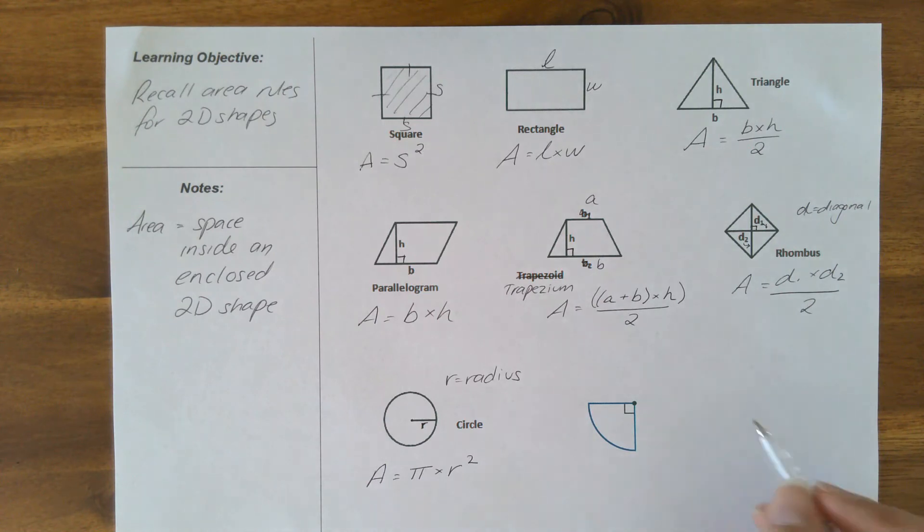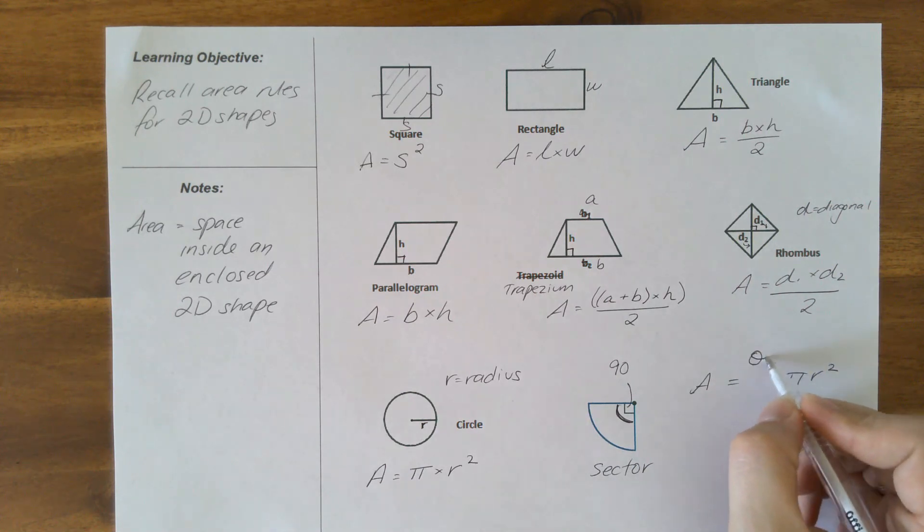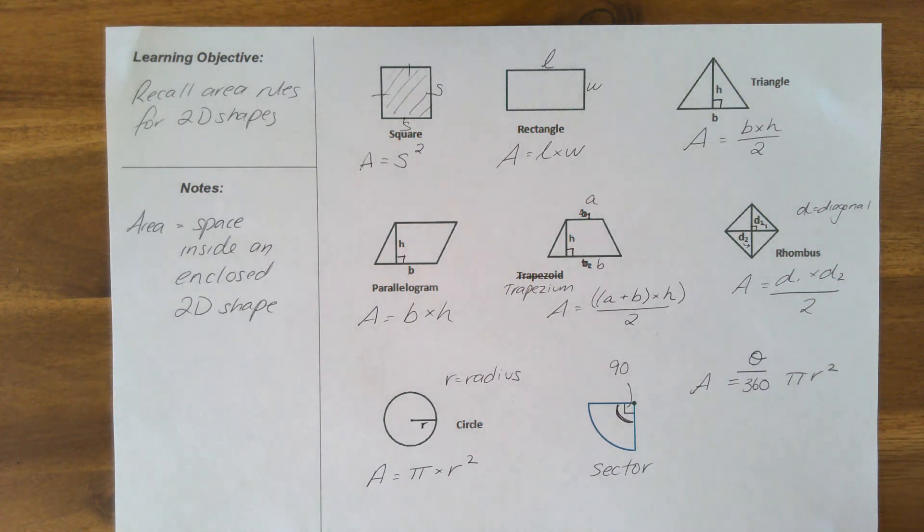And if we are looking at a sector of a circle, we would still have to consider using the pi r squared rule for an entire full circle, but we need to consider how many degrees of that full circle we actually have. Now we know this right angle shows us we've got 90 degrees, and that's actually a quarter of the circle. But if we don't know how many degrees we've got, we have to say theta. So the number of degrees in that sector divided by the total possible 360, and we multiply that by our pi r squared. So there's our rules really quickly run through.